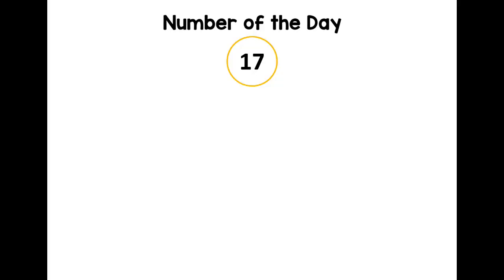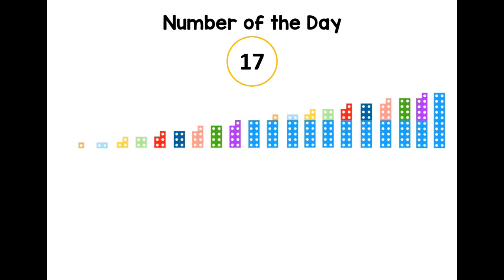Number of the day! Which number will it be? You can see the number is 17 — that's our number of the day. There's our number shapes track. Remember, look at the number: you've got a digit one, that means one ten, and then you've got a digit seven, that means seven ones. So we need the number shapes that are a ten and seven.